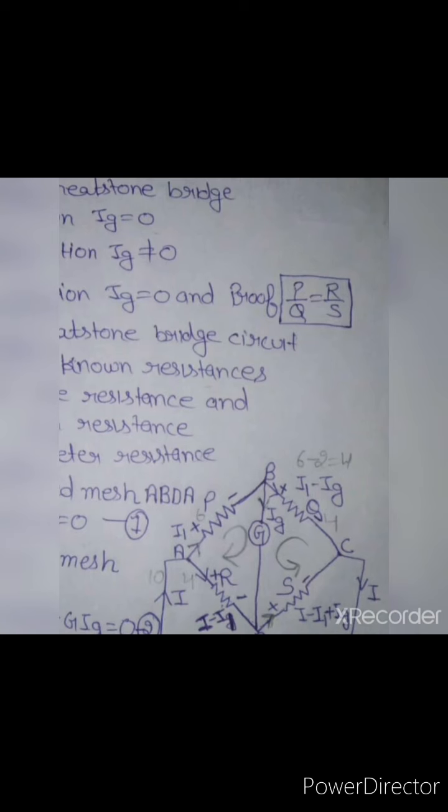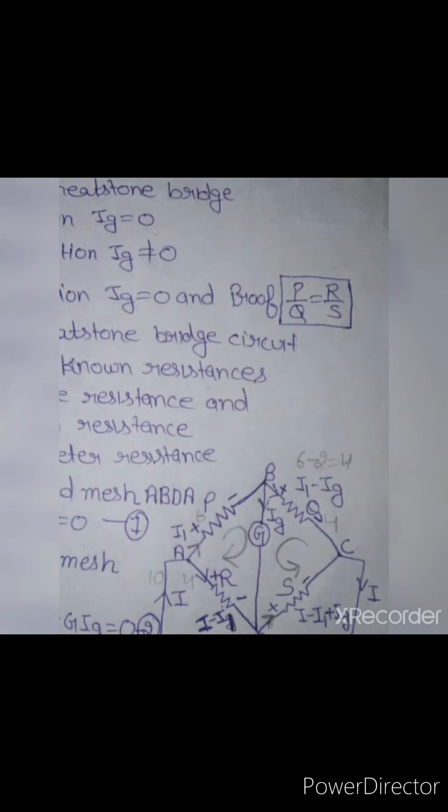So these are four resistances. Three will be known resistances and one is the unknown resistance, which we find using the circuit. You can see a kite-like configuration. Between two points, I have used the galvanometer.